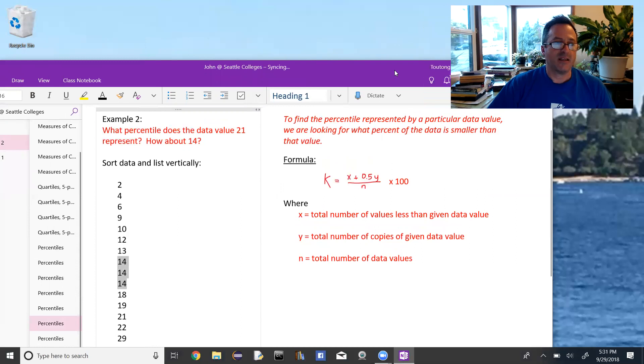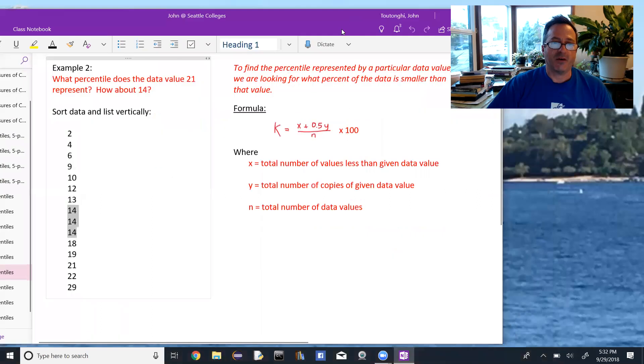So we take a formula, again, this is given in our book. K, the percentile that we're looking for, is equal to x plus 0.5y divided by n, all of that times 100, where x is the total number of values less than the given data value, y is the total number of copies of the given data value, and n is the total number of data values.